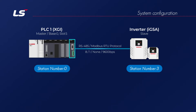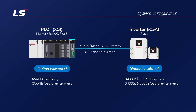You can write and read data to and from the drive via communication. Here we will control the drive by changing reference frequency and operation command. If you write MW10 of XGI to 0x0005 of drive, the reference frequency of drive is updated by MW10 data. And if you send MW11 of XGI to 0x0006 of drive, MW11 data will be used as the run command.